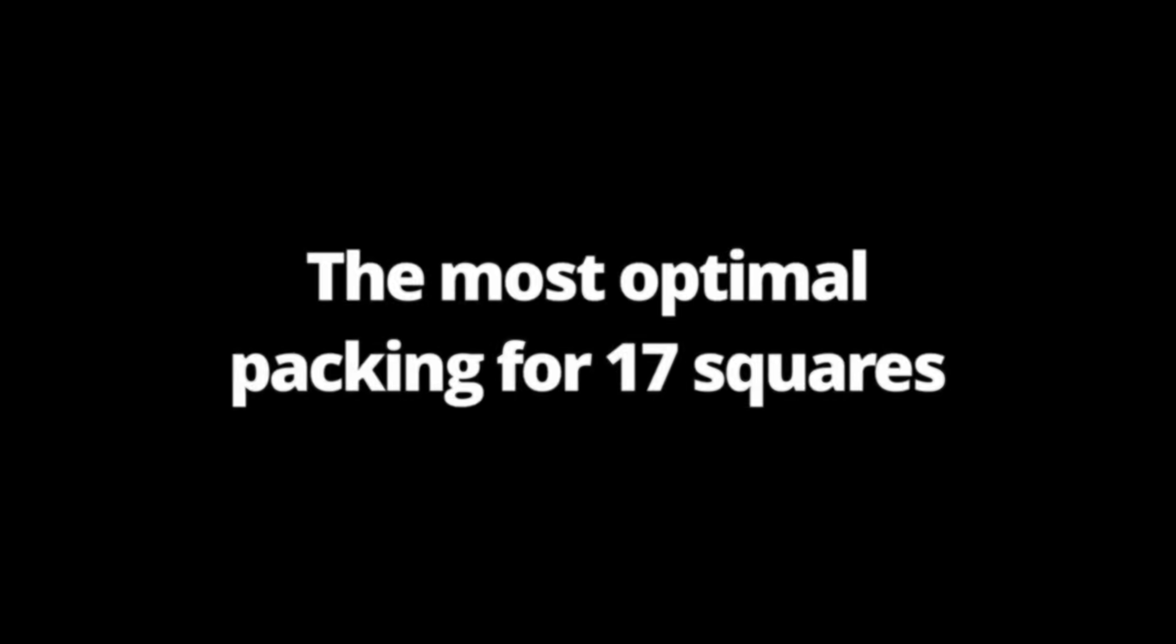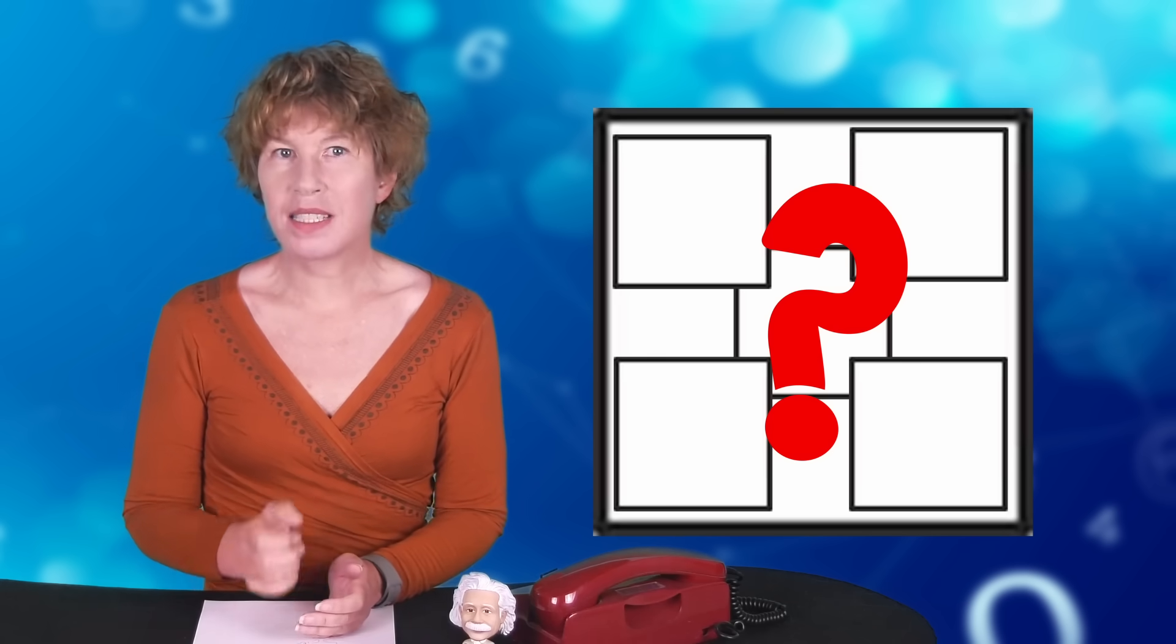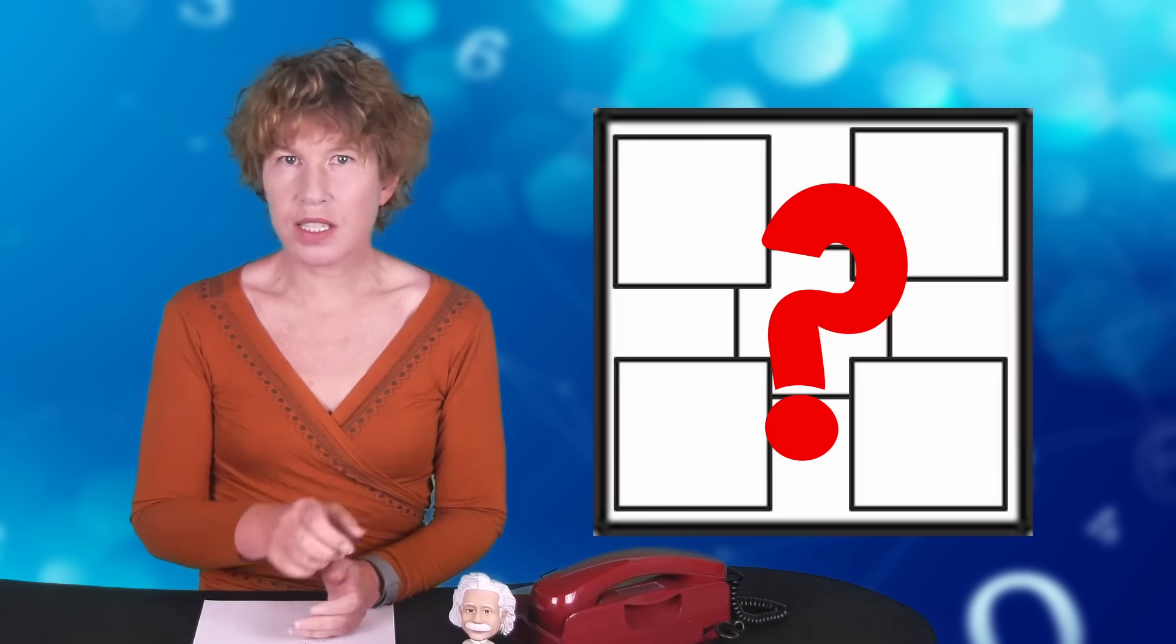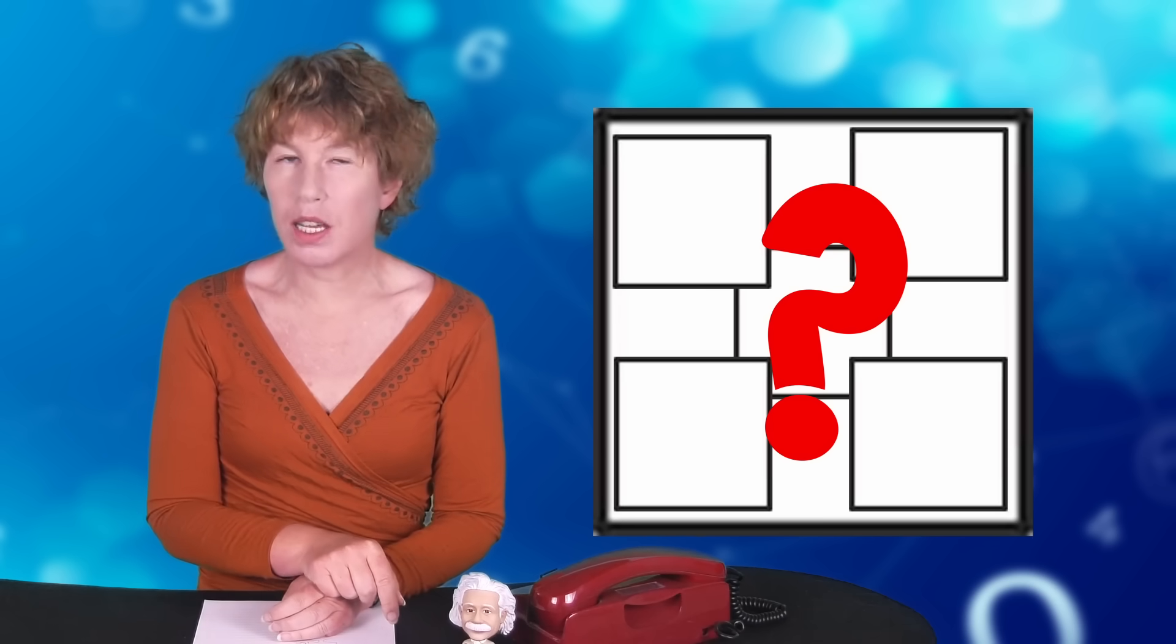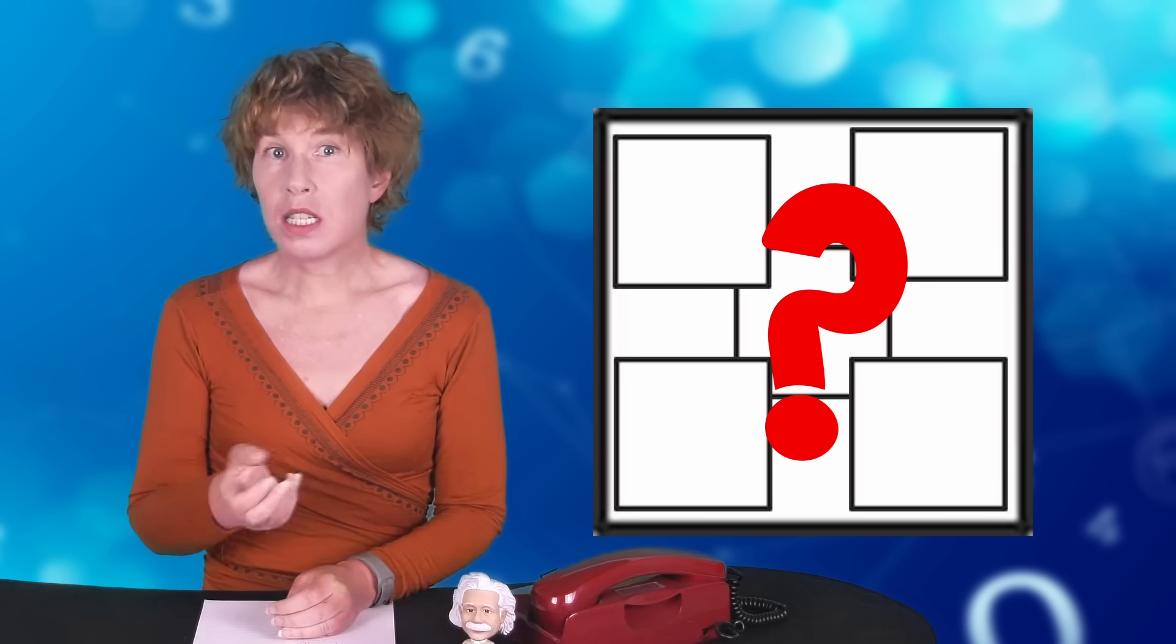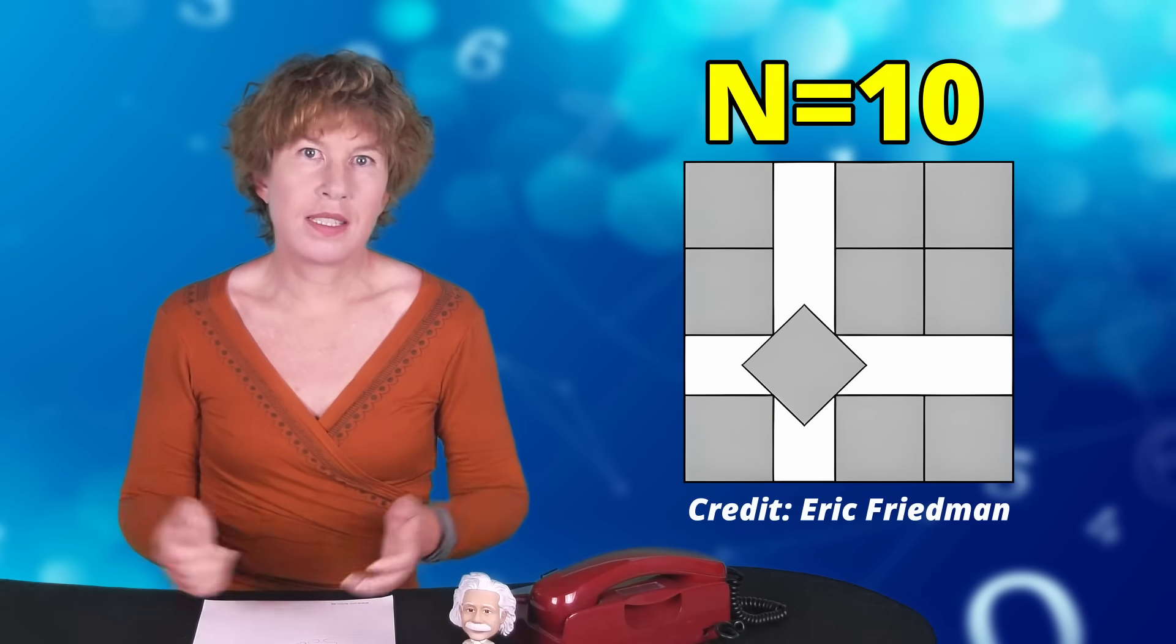8. The most optimal packing for 17 squares. Imagine you have a set of n square tiles. What's the smallest larger square that they'll all fit into without overlapping? The answer's obvious if n is a square number, and for most other numbers, the results look reasonable enough.